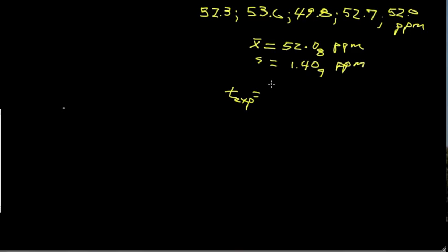It's the difference between our accepted value and our average value. Our colleague now reveals the sample was prepared with 50.0 parts per million of this metabolite. So we take that, the absolute difference, and 52.08. We divide by our standard deviation, 1.409.